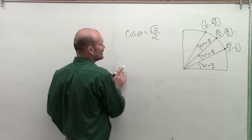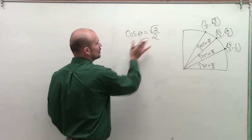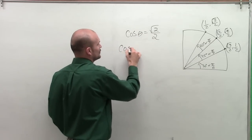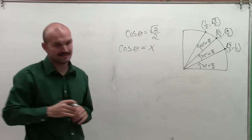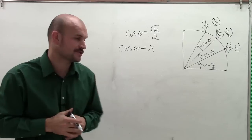So the first thing I need to represent is: what does the cosine of an angle represent on the unit circle? Remember, cosine of an angle represents the x-coordinate of your point on the unit circle.